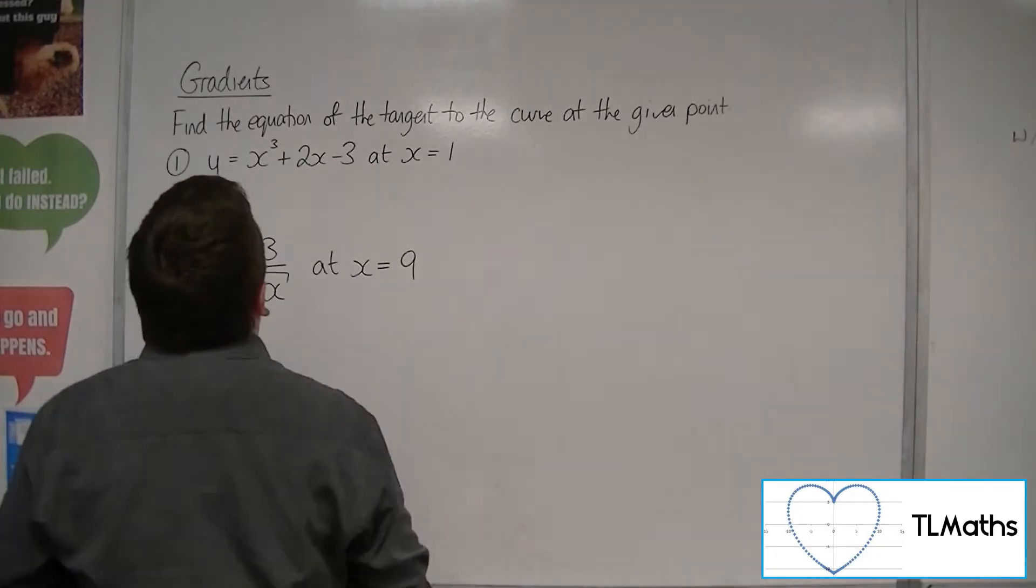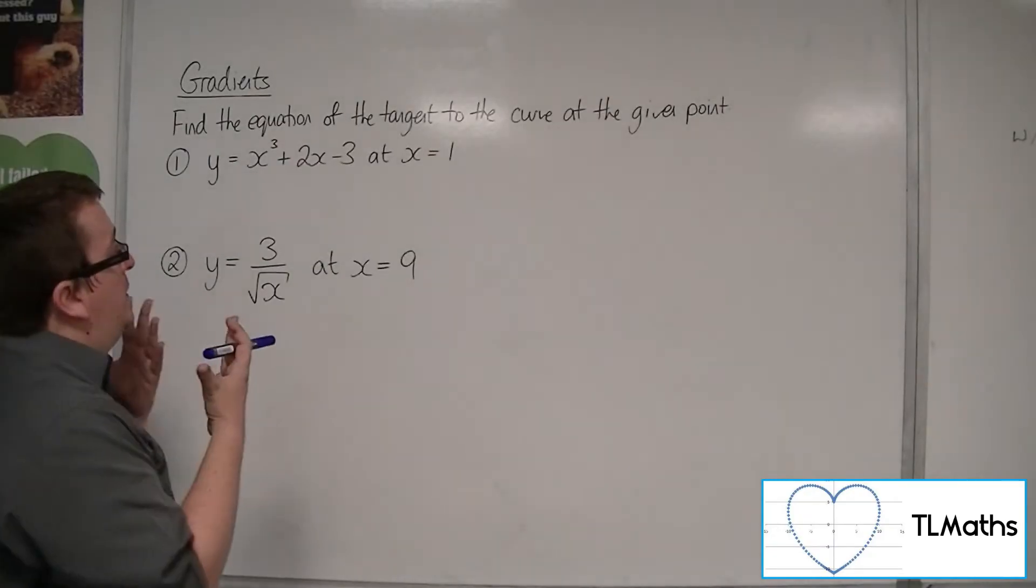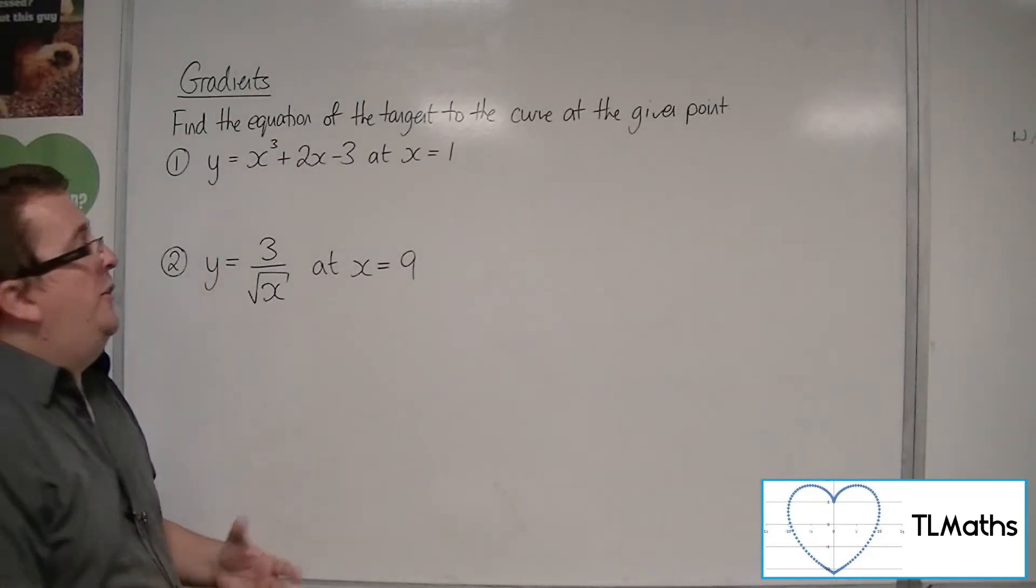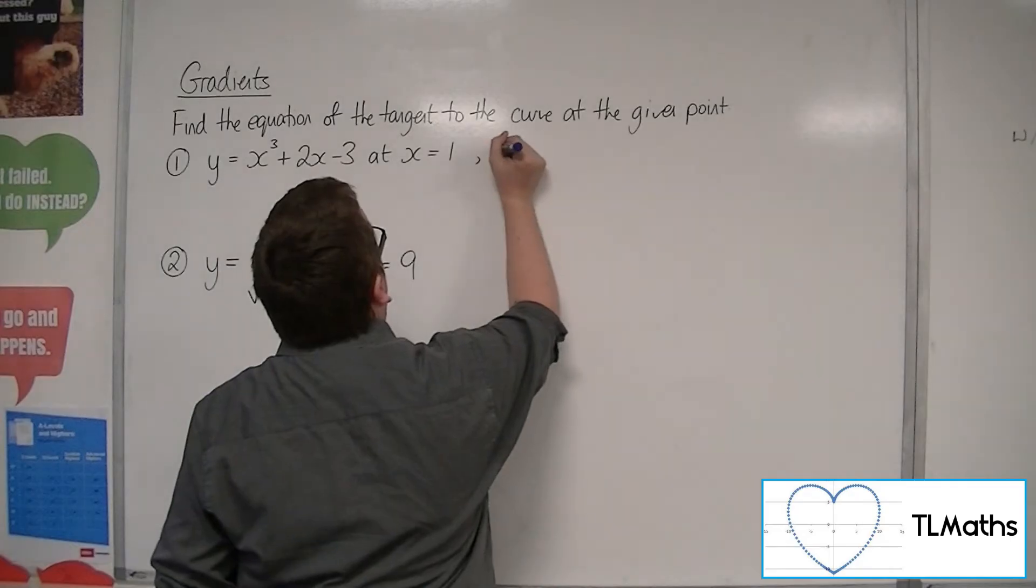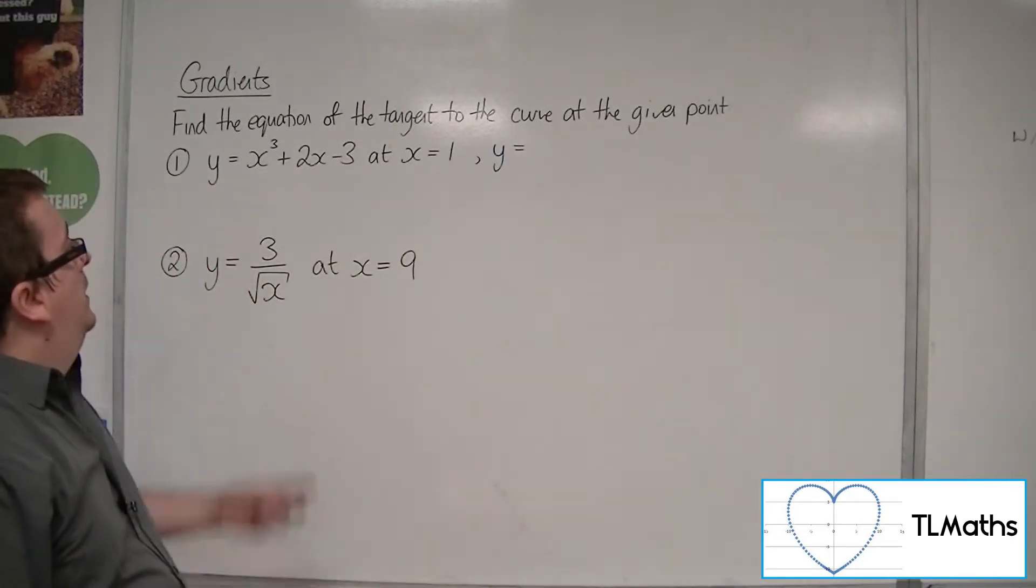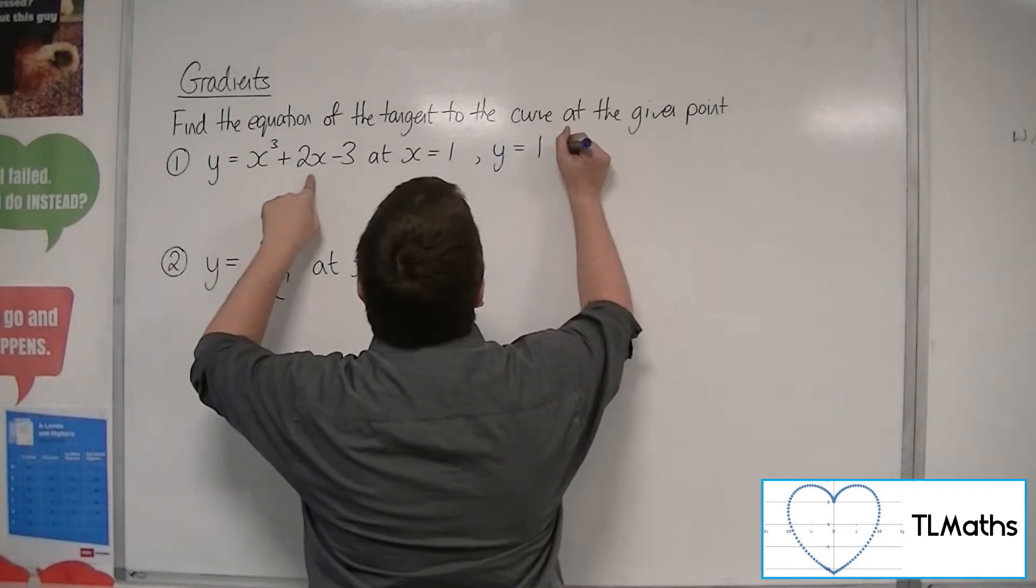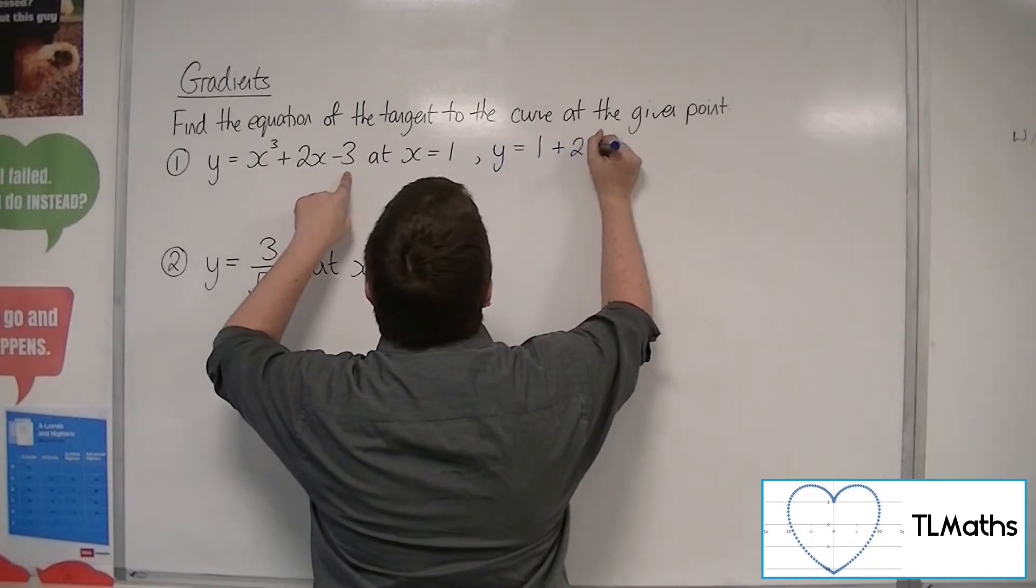So the first thing that we really need to do is we need to find the y coordinate that goes with that x coordinate. So we just need to substitute in the 1 into the y equals. So y is equal to 1 cubed plus 2 lots of 1 take away 3.